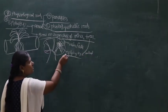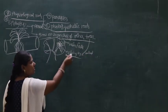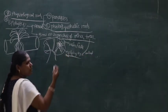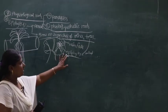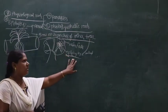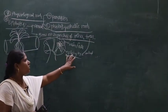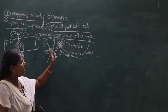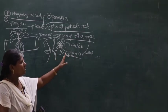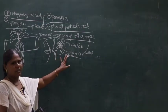Epi means on the surface. Phytes means plants. So epiphytes are plants that grow on the surface of other plants.